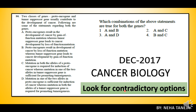There are some questions that have contradictory options. What I mean is: if you understand one statement says one thing, the other says the opposite. Now look at this question on cancer biology — two genes: Proto-oncogenes and Tumor suppressor genes. Two classes of genes that usually contribute to the development of cancer. Following are some statements regarding both genes.